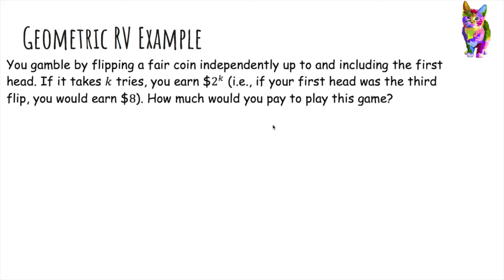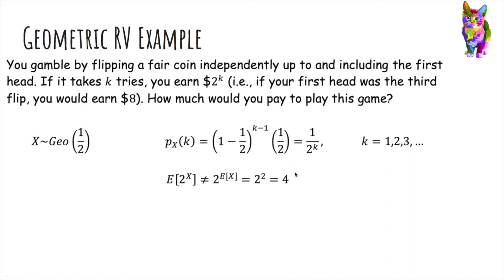So we'll compute the expectation. So let X be the number of flips until the first head. And so it's geometric with parameter half because it's a fair coin. Then the probability mass function of X is this. And the most important thing to notice first is that we want the expected value of 2 to the X. The earnings is 2 to the however many flips it takes. And this is not equal to 2 to the E[X], which would have been 4.